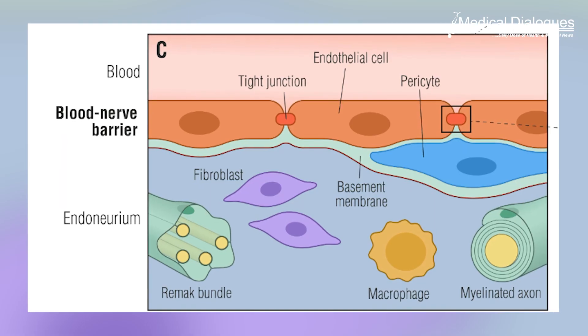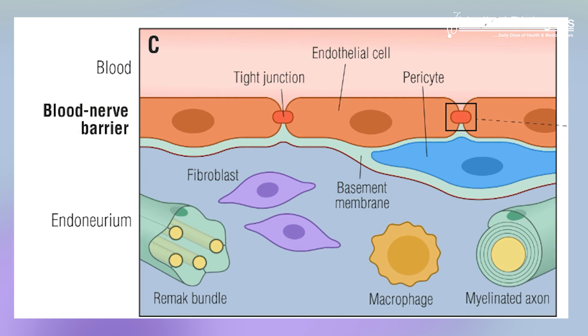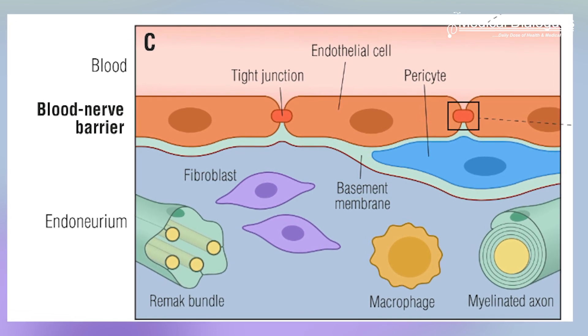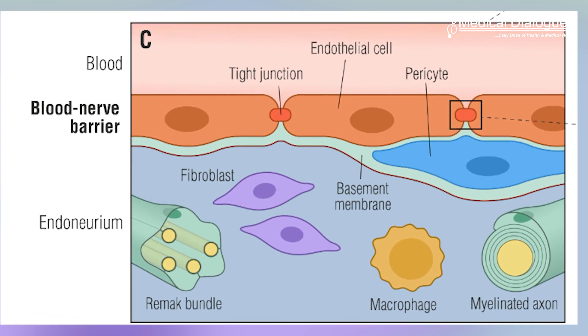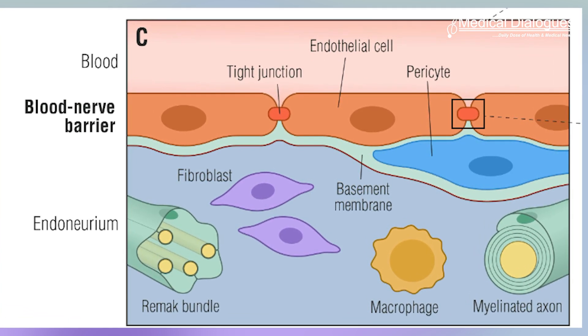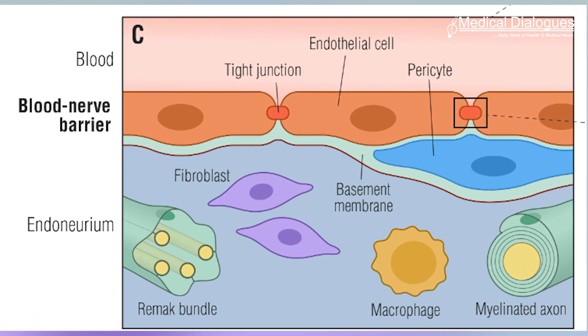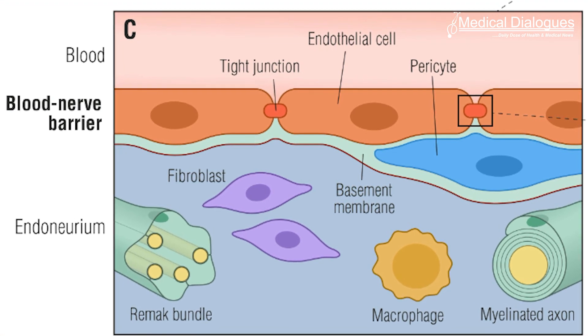To maintain the homeostasis of neural tissues and normal neural activity, the brain vasculature forms the blood-brain barrier, or BBB, during development, strictly controlling substance exchange between blood and brain parenchyma. Abnormalities in the BBB are closely associated with various brain diseases such as Alzheimer's disease.